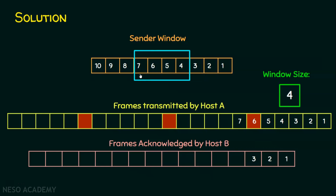The receiver acknowledges frame 3, and the sender transmits frame 8; the window slides. The receiver acknowledges frame 4, and the sender transmits frame 9; the window slides again. The receiver acknowledges frame 5, and the sender transmits frame 9. The current window now holds frames 6, 7, 8, and 9.